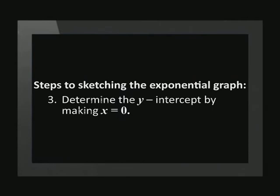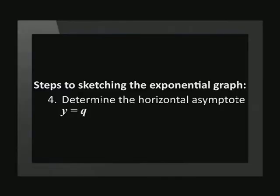Thirdly, we must determine the y-intercept by making the value of x equal to 0. Next, we determine the horizontal asymptote. We do this by making y equal to the value of q in the standard equation.